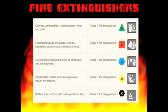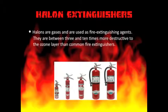Type A fire extinguishers cover ordinary combustibles including paper, wood, and cloth. Type B covers flammable liquids and gases. Type C fire extinguishers are for electrical fires. Type D fire extinguishers are for combustible metals such as magnesium. Halon extinguishers are also a type.